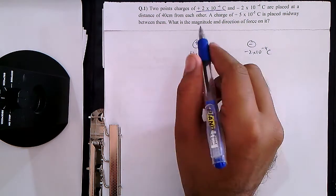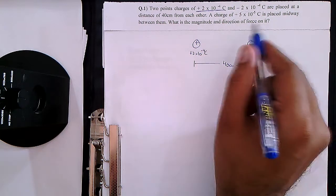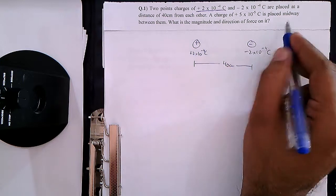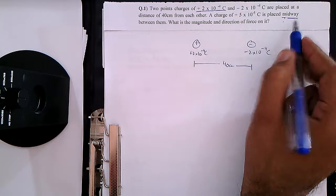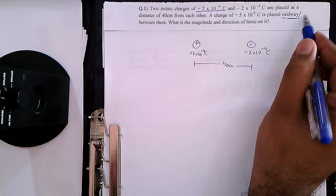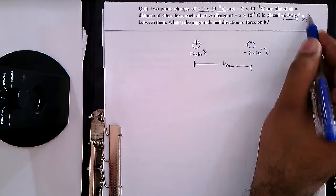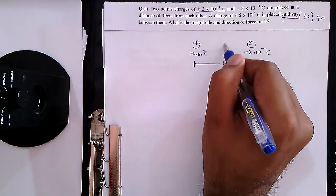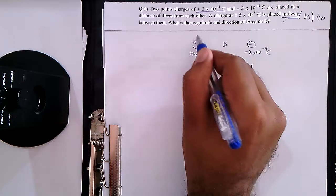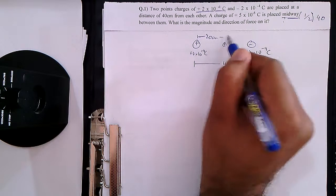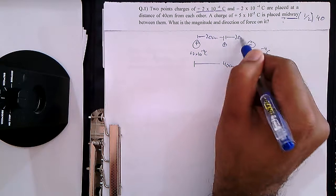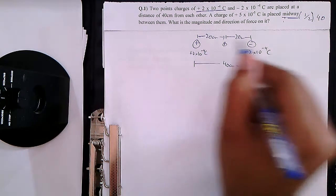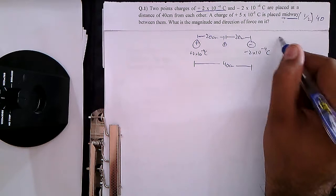A charge of positive 5×10⁻⁵ coulombs is placed midway between them. Midway means that you divide the total distance in half, so the third charge sits at the center point between the two charges.